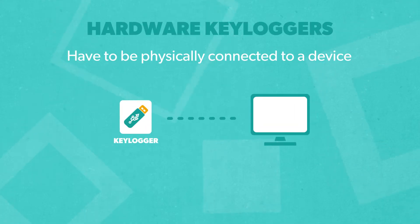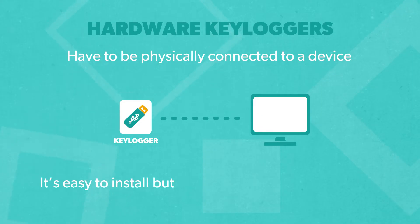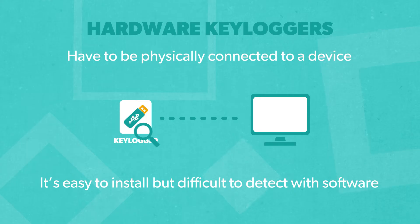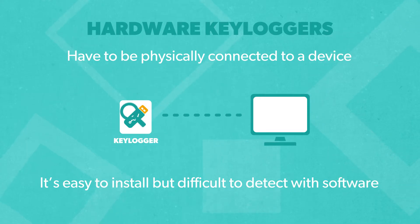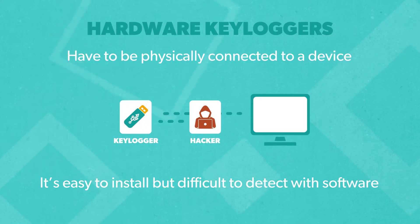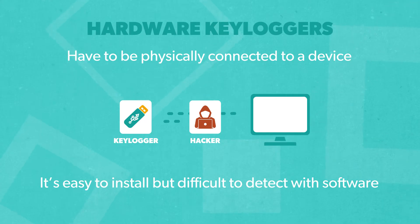Hardware keyloggers have to be physically connected to a device, usually via a USB or PS2 port. They're easy to install and difficult to detect with software, but they're fairly easy to detect by physically inspecting the device. Plus, they have to be physically accessed by the attacker to download the data.